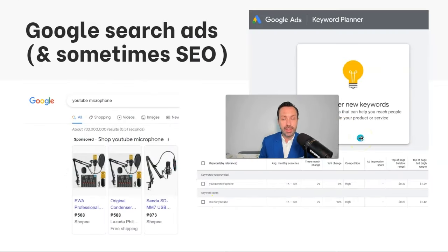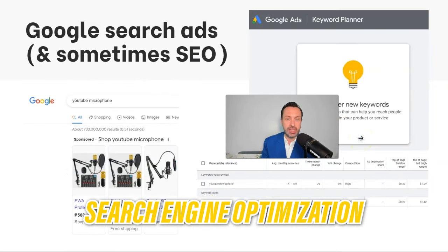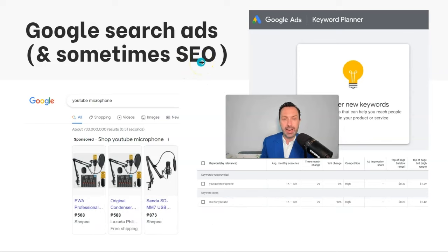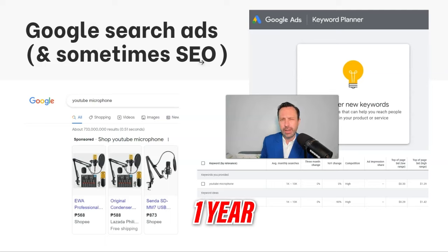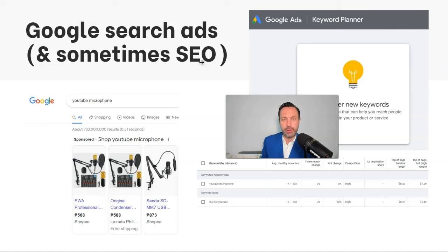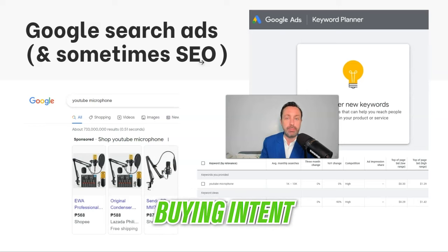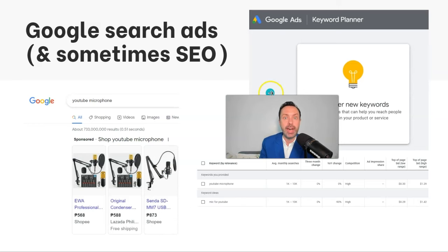Another related thing you can do is search engine optimization, or SEO. The reason I have this listed as 'sometimes' is because SEO can take a long time to get results — it might take upwards of a year. So it's not always the best at generating a quick profit. It's only effective for quick profit when you're focusing on keywords with buying intent, such as 'buy shirt now,' rather than more generic keywords.